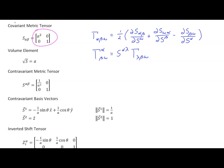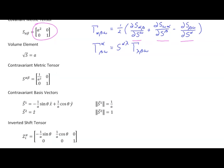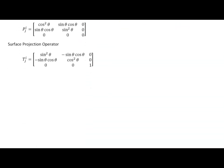For the cylindrical surface we're looking at here, all the elements of the covariant metric tensor are constants, and that means all of these partial derivatives are going to be zero, and thus all of the Christoffel symbols of the first kind and the second kind are going to be zero. So for the cylindrical surface, all of the Christoffel symbols are equal to zero.